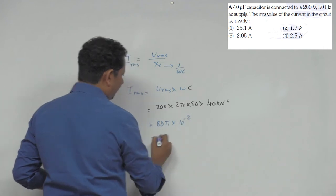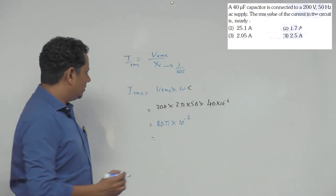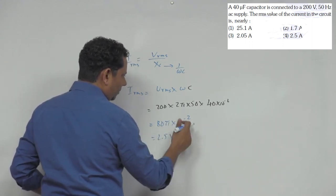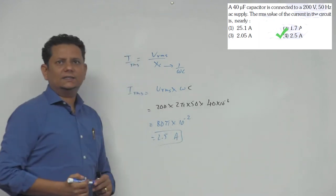4, minus 2. Now 80 pi, pi hota hai 3.14, isse jab multiply karenge so yeh bacha hai 2.5 multiplied by, iska ek point aur iska ek point cancel ho jayega, so 2.5 ampere would be our final answer.